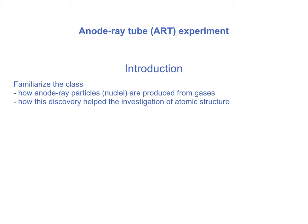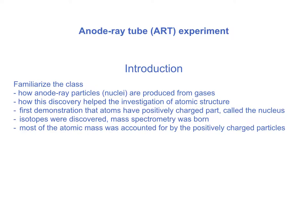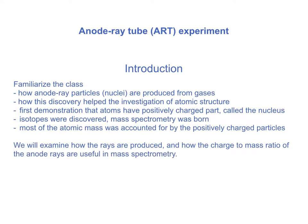This is the missing piece in Thomson's model and this is the first demonstration that all matter has positively charged particles, which were later named the nucleus. Isotopes were also discovered — isotopes are elements that have the same atomic number but different atomic masses. Most of the mass of the atom was found to be associated with the positively charged anode ray particles.